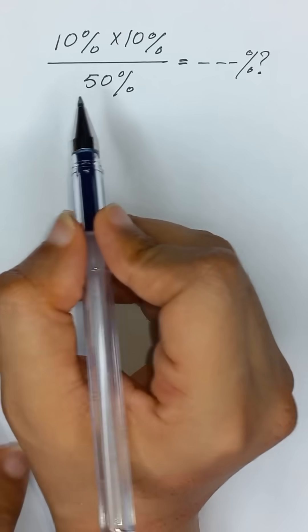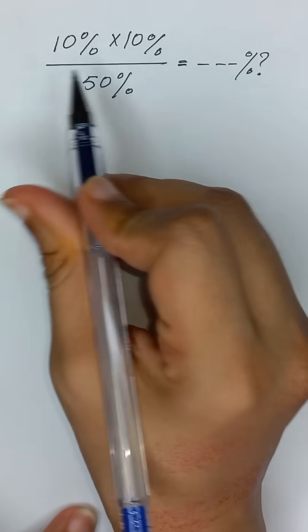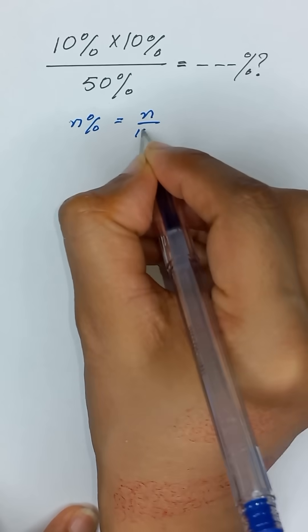10% multiplied by 10% divided by 50% is equal to how many percent? As we know that n% is equal to n divided by 100.